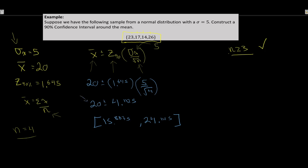The point estimate is x-bar — that's our one point in time. Conducting a 90% confidence interval means 9 out of 10 times this covers the true population mean. The interval runs from 15.8875 to 24.1125. The catch in this case was that the raw data required us to first calculate our value of x-bar. Let's take a look at the next one.